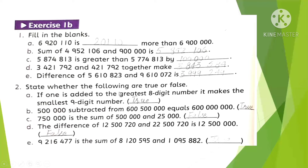Question 2: State whether the following are true or false. If one is added to the greatest eight-digit number, it makes the smallest nine-digit number — true. Five hundred thousand subtracted from this amount equals this — true. This amount is the sum of this amount and this amount — false. The difference of this and this — false. The given amount is the sum of these two numbers — true.